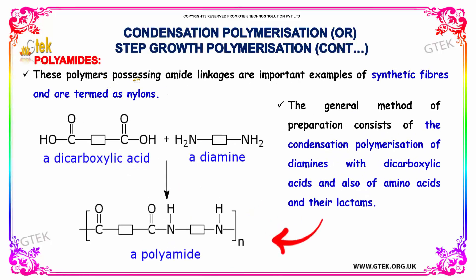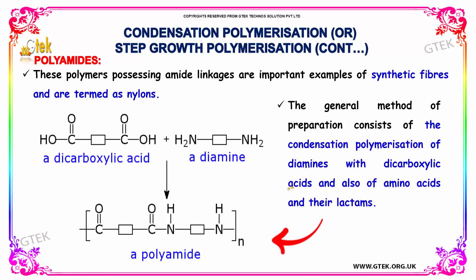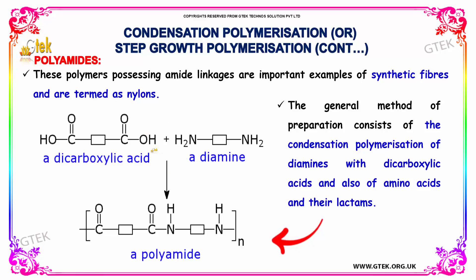These polymers possessing amide linkages are important examples of synthetic fibers and they are termed as nylons. We have a dicarboxylic acid and a diamine, and with n units of polymerization of these two reactants we get a polyamide. The general method of preparation consists of the condensation polymerization of diamines with carboxylic acid, and also of amino acids and their lactams.